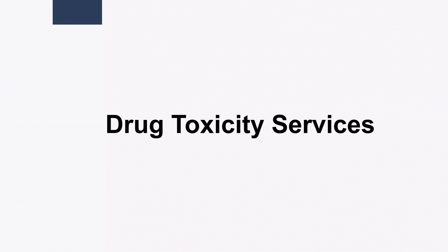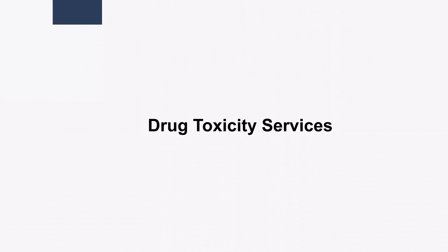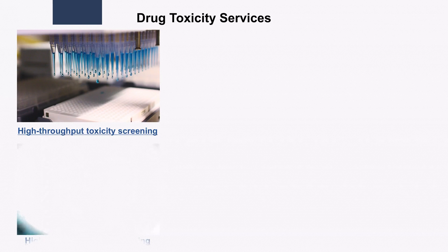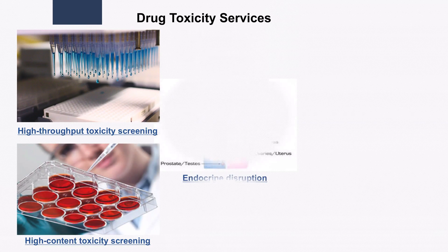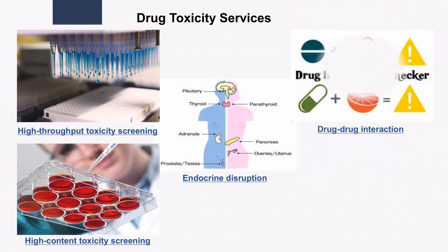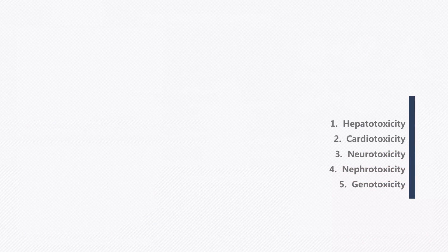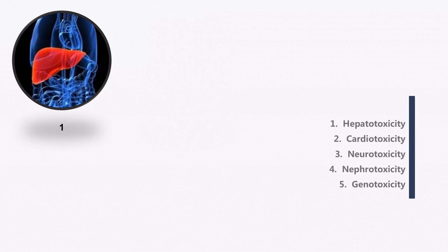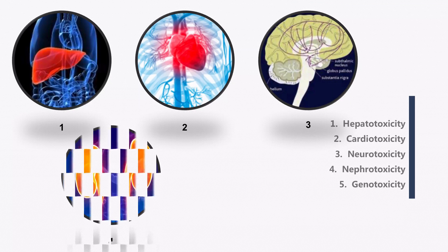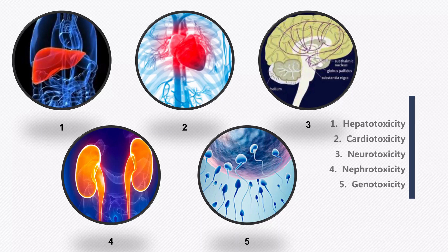In addition, identifying potential drug toxicity to different tissues and organs is also important. Services include high-throughput toxicity screening, high-content toxicity screening, endocrine disruption, drug-drug interaction, and general toxicity. A panel of in vitro cell-based assays can help. In general toxicity, we provide hepatotoxicity, cardiotoxicity, neurotoxicity, nephrotoxicity, and genotoxicity. Toxicity assays based on 3D cell cultures are also available.